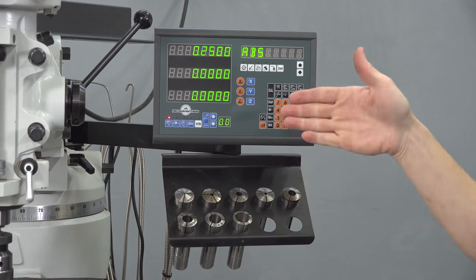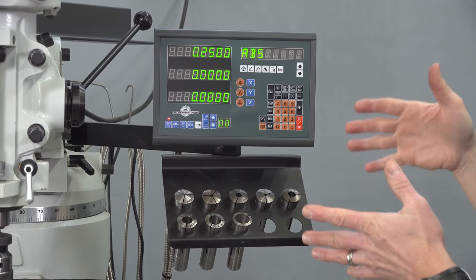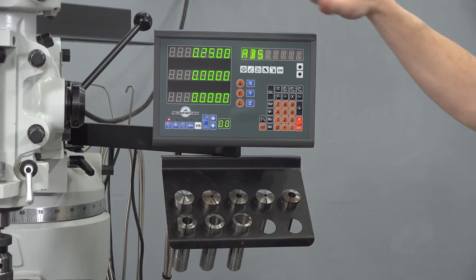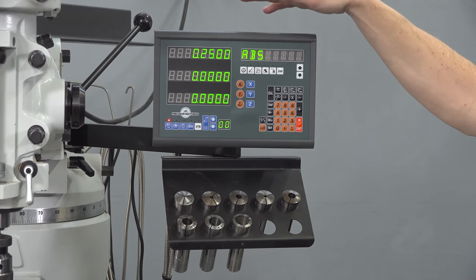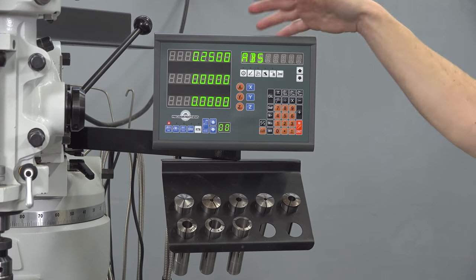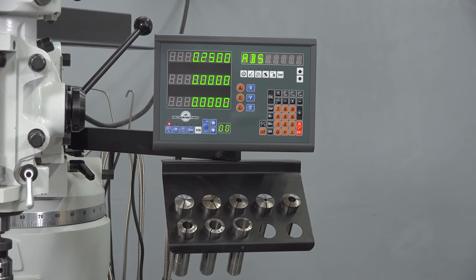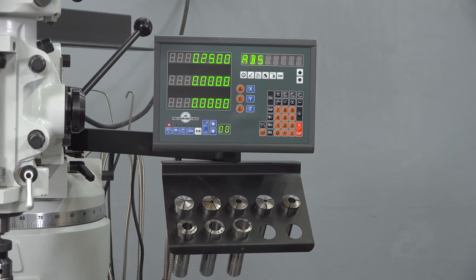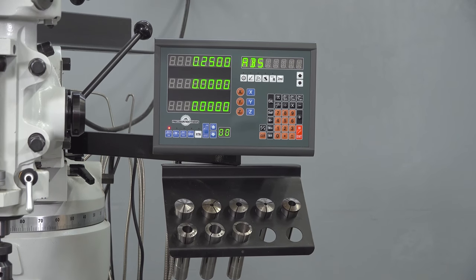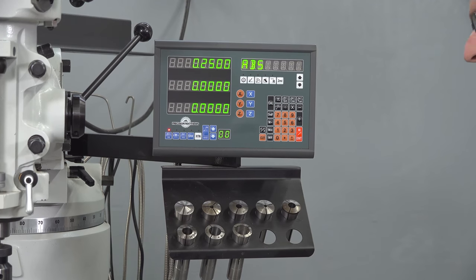You're going to want to check the Precision Matthews product page for whichever mill you're looking at. They have some new offerings and different offerings, but this is definitely something that I would consider if you're getting a mill. It's probably worth it to have Precision Matthews install it because the installation of a DRO is a very complicated and time consuming process. If you're mechanically inclined and have the time, definitely consider doing it yourself.